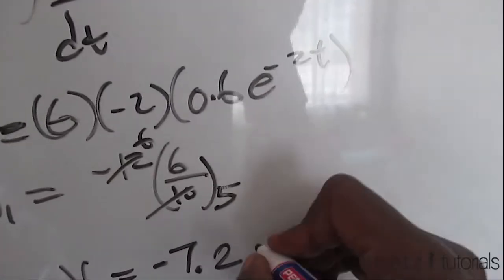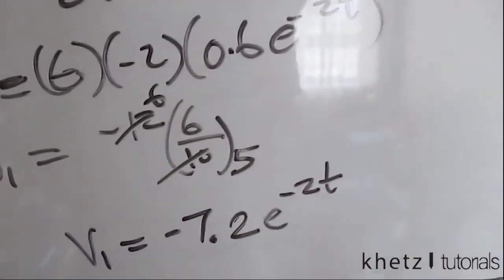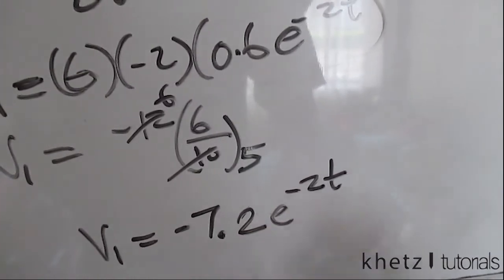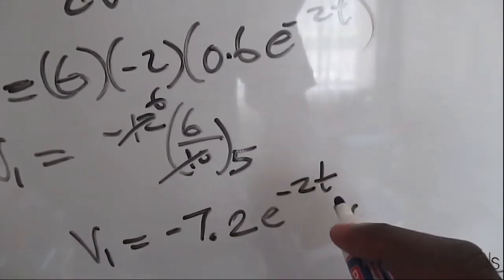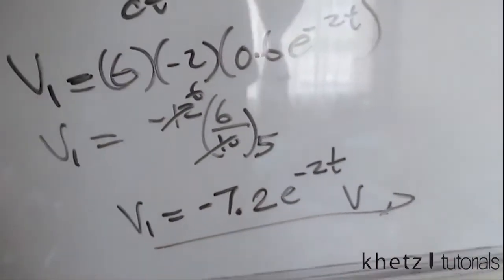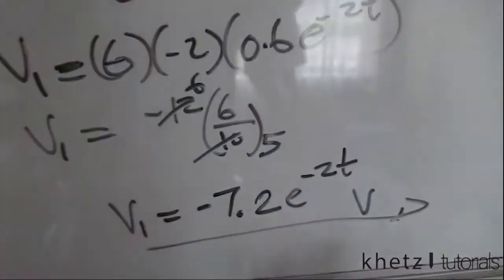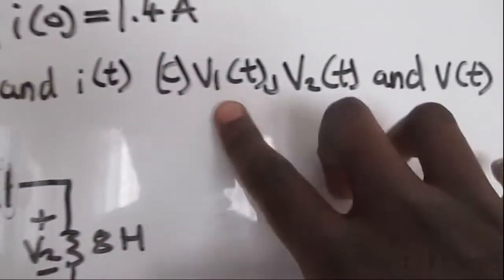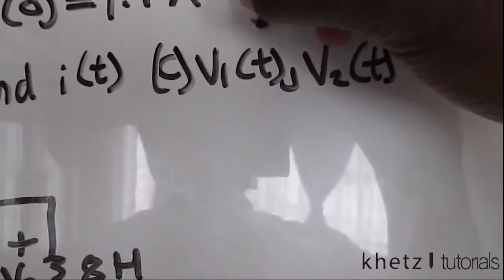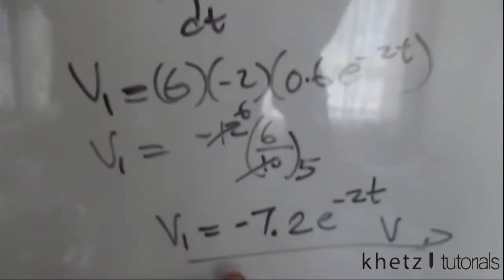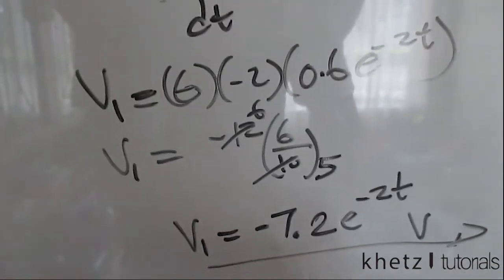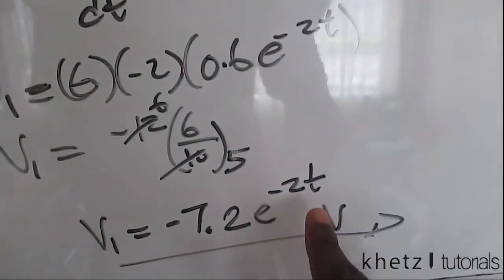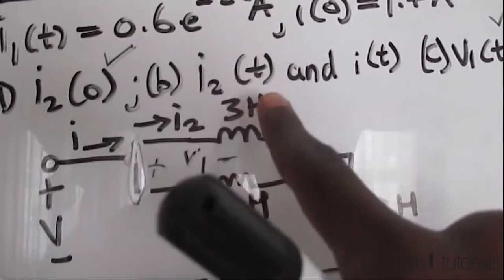Completing the calculation gives v1 = -7.2e^(-2t) volts. That is our v1. Notably, v1(t) was also one of the quantities the question asked us to find, so we've already answered that part: v1(t) = -7.2e^(-2t) volts.